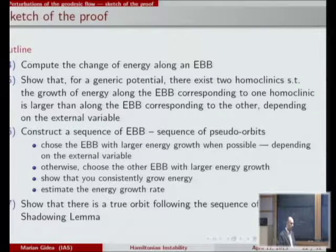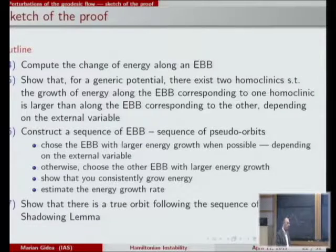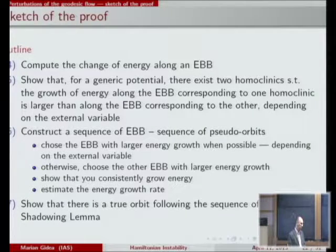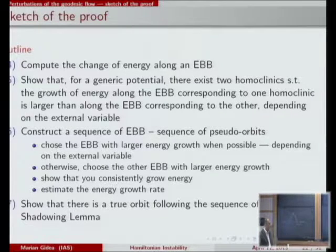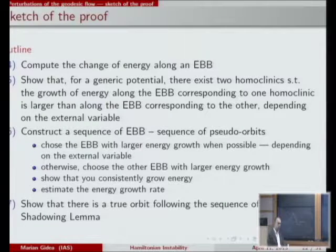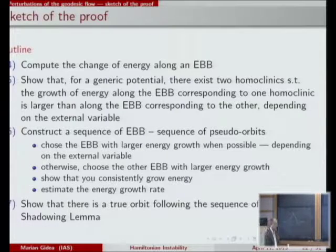At every step you apply the scattering map and inner dynamics, making a choice of which homoclinic gives better energy growth. Progress made is not lost: there is a computation showing that losses occur at subdominant order with respect to epsilon. Repeating this over and over and applying the shadowing lemma from before — which tells you that pseudo-orbits of this type have nearby true orbits — completes the argument.